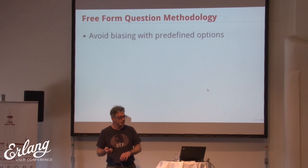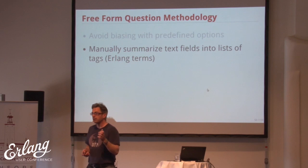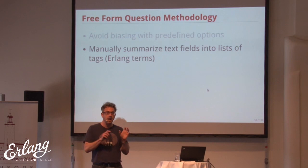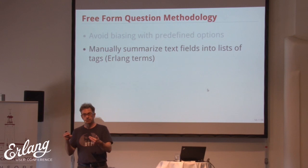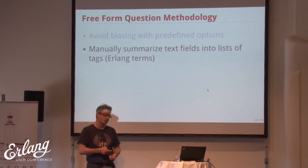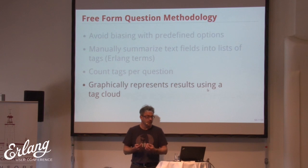Let me talk about the free-form methodology. Avoid biasing with predefined options — we talked about that. Manually summarize the text fields into lists — this took a while. If somebody took the time to type something, I read every one and summarized every one. I thought fairly hard about what they were saying and mapped their points into tags. Tags represent a representation of an idea. This is a way to quantify qualitative results.